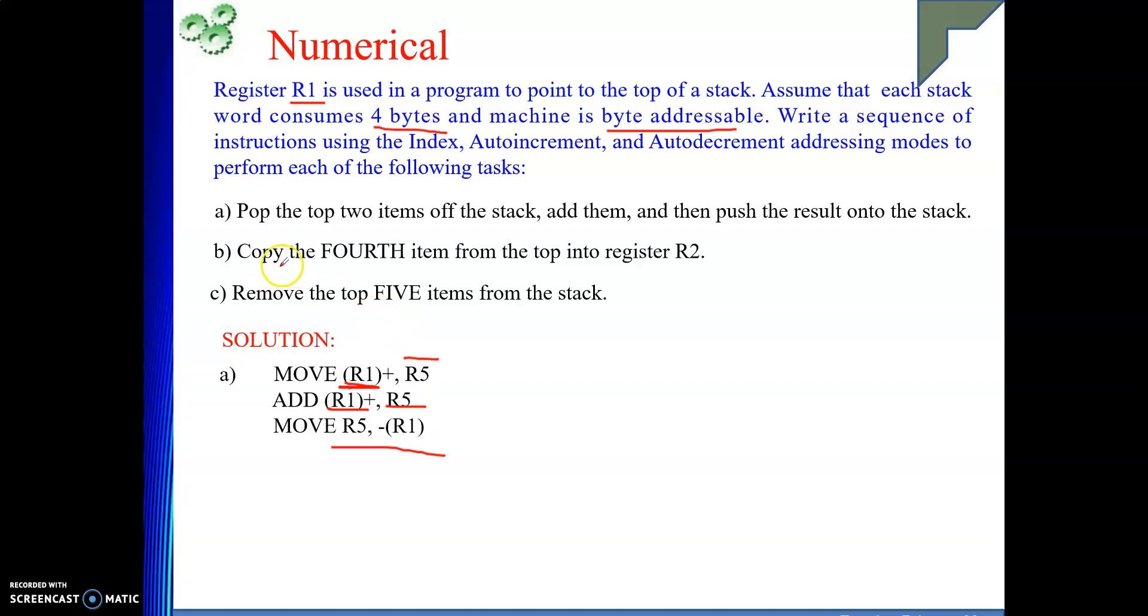Next one is copy the fourth item from top into register R4. They are talking about fourth item. So, one element will take how much? Four bytes. That means four locations. So, fourth item will be located at how much offset? From the top of the stack, four into four. That is 16 offset. From the top. So, what you need to do? Copy. So, what you will write? Move 16 R1 comma R2. Yes or no? 16 R1. Why 16? Because fourth item.